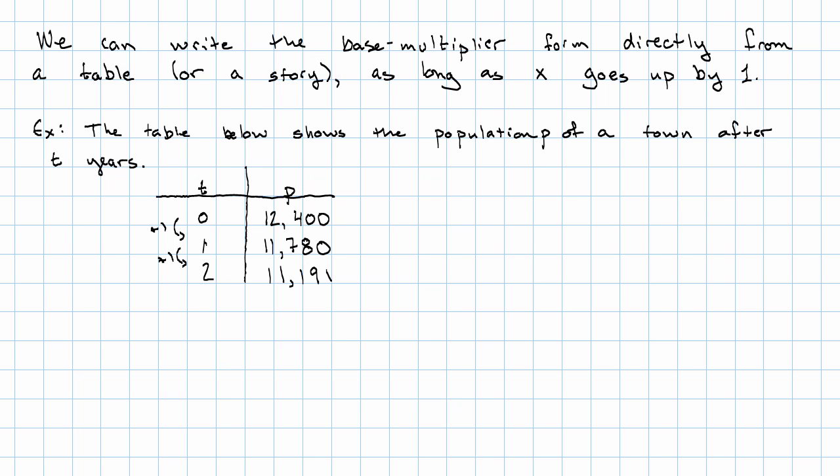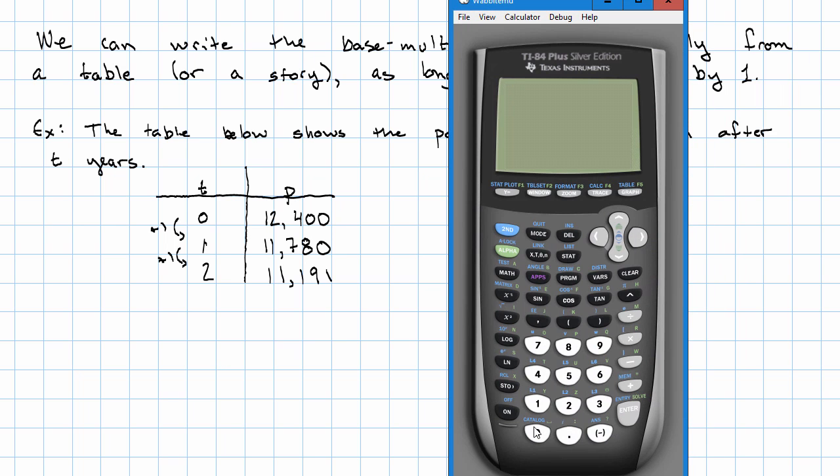And calculating, we see, 11,780 divided by 12,400. Here we multiply by 0.95. 11,191 divided by 11,780. Here we multiply by 0.95 again.